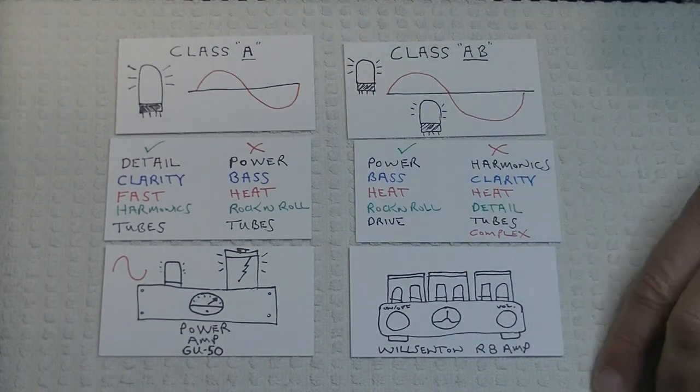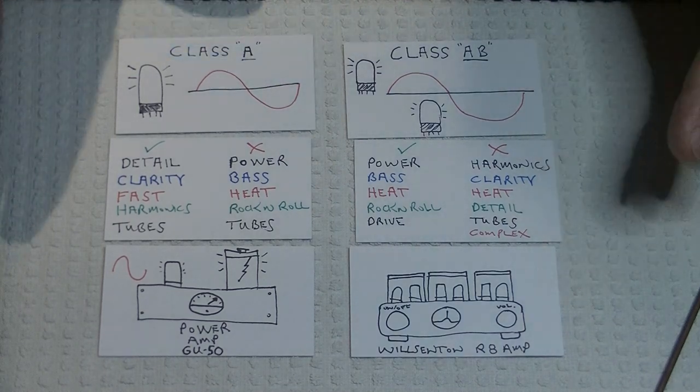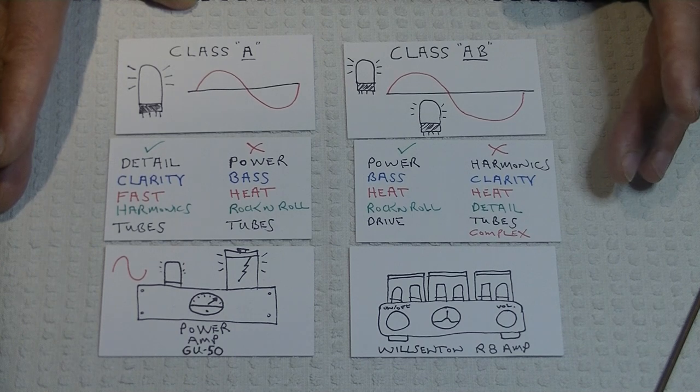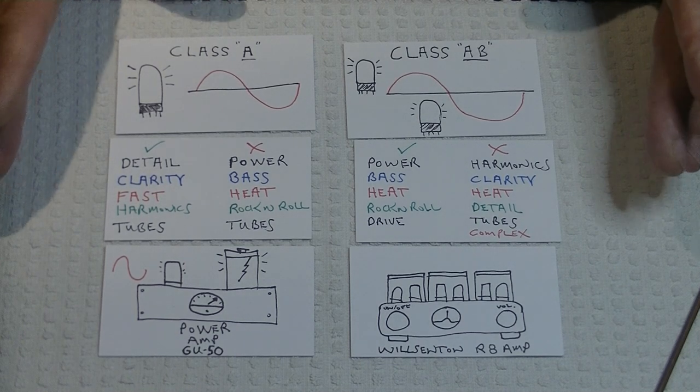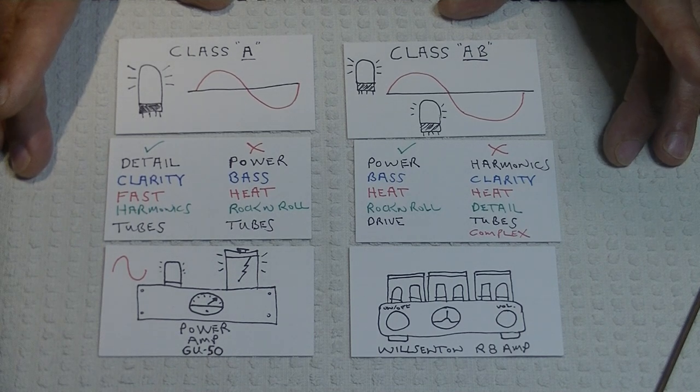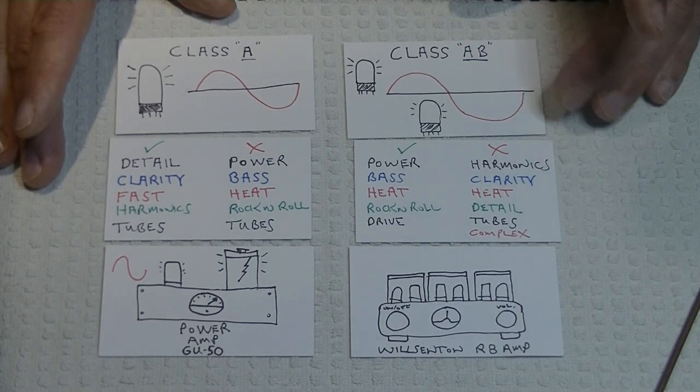Okay, enough of Class A and Class AB. And, of course, there's a whole series of other classes. You can go all the way up to a very modern, high-speed switch in Class D. But for tube amps, the dominant classes that are in use today are Class A and Class AB.